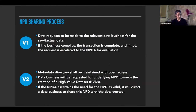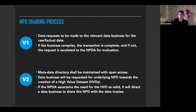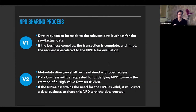Now the crux of the framework — the NPD sharing process. In version one, Indian citizens and organizations would have access to the metadata about the data collected by data businesses. A request would be made to the relevant data business for the underlying data. If the business complied, the transaction would be complete. If not, the request would be escalated to the non-personal data authority for evaluation. The NPDA would then direct the data business to share their data if the request is valid — at no cost for raw data sets, or at a FRAND-based remuneration for data sets considered to have some value add.